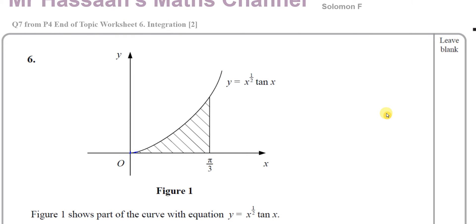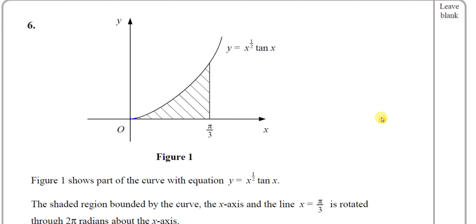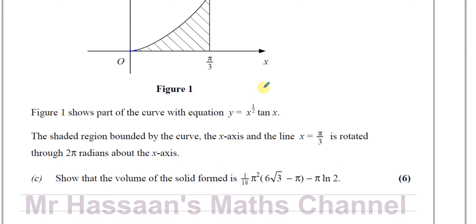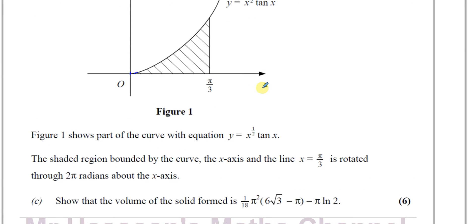Figure one shows part of the curve with equation y equals x to the power of a half times tan x. The shaded region bounded by the curve, the x-axis, and the line x equals π/3 is rotated through 2π radians around the x-axis. Show that the volume of the solid formed is (1/18)π² × (6√3 − π) − π ln 2.